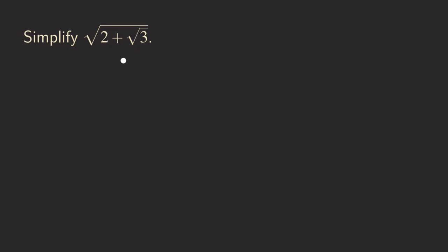It's a really short video. So first we are going to write this expression so that we have two plus radical three, and then we have a denominator. We are going to write it all over one. So this is our expression.